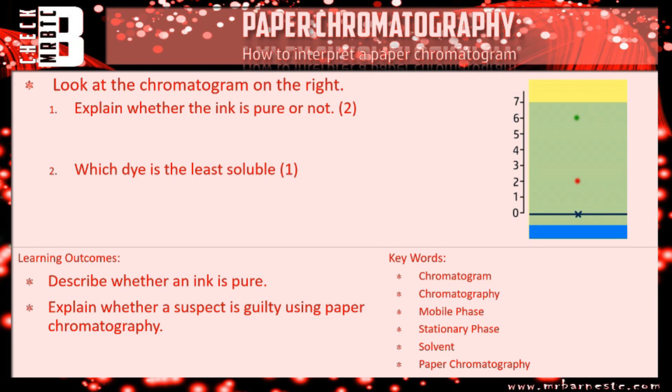Okay nice and quickly then let's go through. Is it pure or not? Well you've got two dots in the same ink therefore it is not pure or it is a mixture. That gets you your first mark. Again how do you know? What do you write down for your explanation? It has more than one dot, more than one dye, more than one colour. Anything like that will get you that mark.